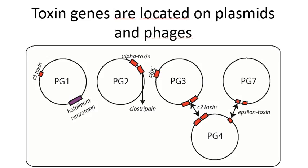We also found that some strains have the potential to produce several toxins in addition to the botulinum neurotoxin. Most of these toxin genes are located on plasmids and phages, which indicates that a reservoir of virulence genes can be exchanged between strains.